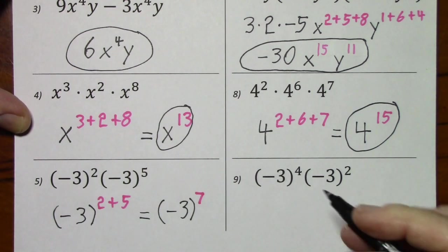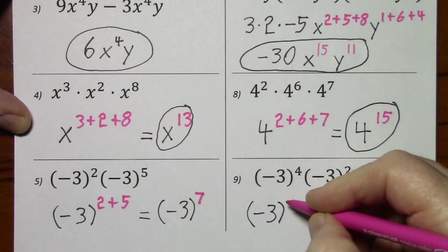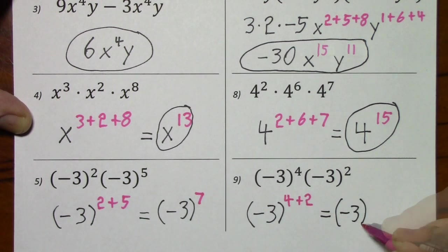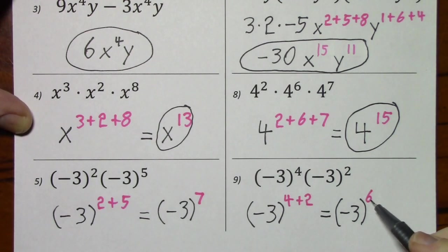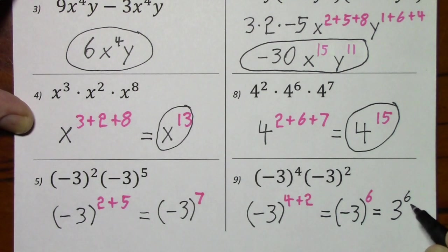Number 9 is very similar, so we'll have negative 3 to the 4 plus 2, which is negative 3 to the 6th. But you have to note that this is an even power. Your negative is within the parentheses, so the result would be a positive 3 to the 6th power. Again, this is still exponential notation, but you know that the answer is positive because you have a negative in parentheses raised to an even power.